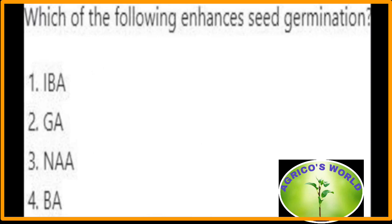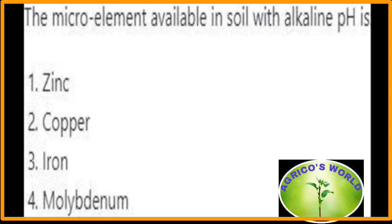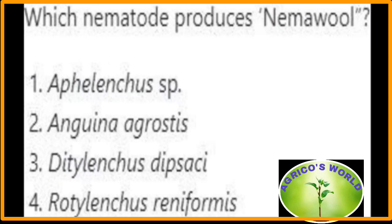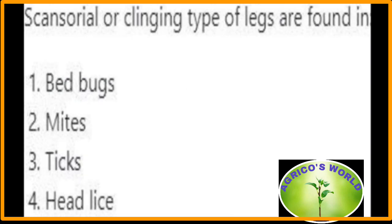Gibberellic acid enhances seed germination. The micro element available in the soil with alkaline pH is molybdenum. Molya disease of wheat is more severe in the state of Haryana. The nematode that produces nema wool is Ditylenchus dipsaci. Scansorial or clinging type of legs are found in head lice.